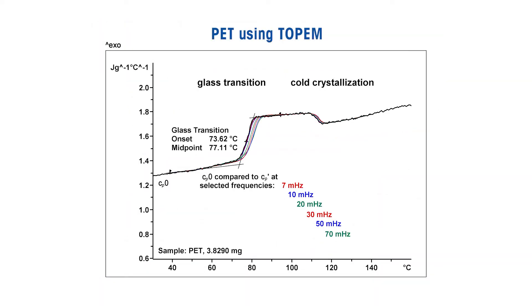This diagram shows the specific heat capacity curve in more detail. The glass transition can be clearly seen with a midpoint at 77 degrees. Cold crystallization occurs at about 115 degrees.